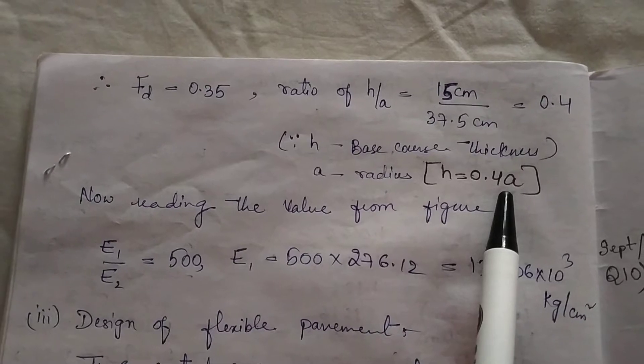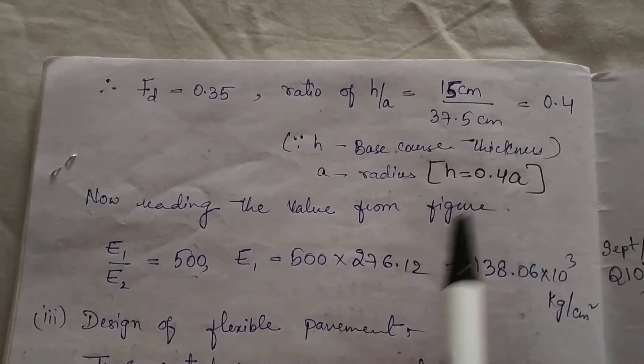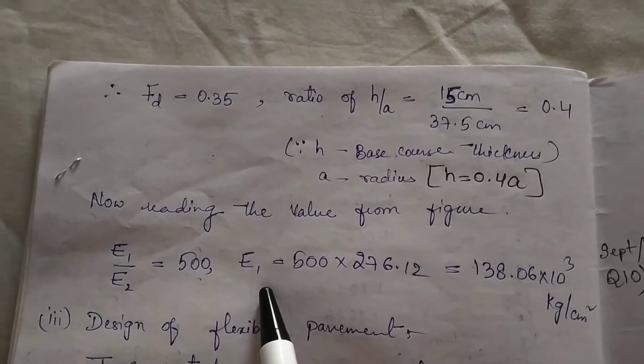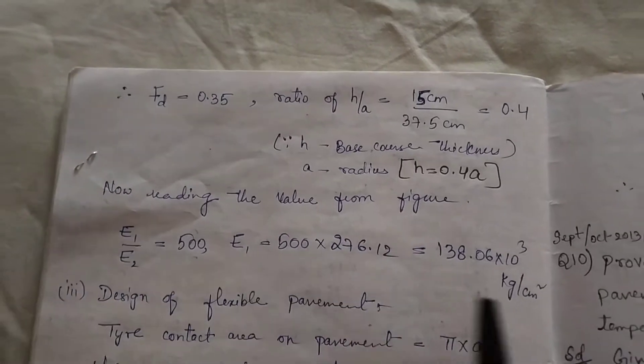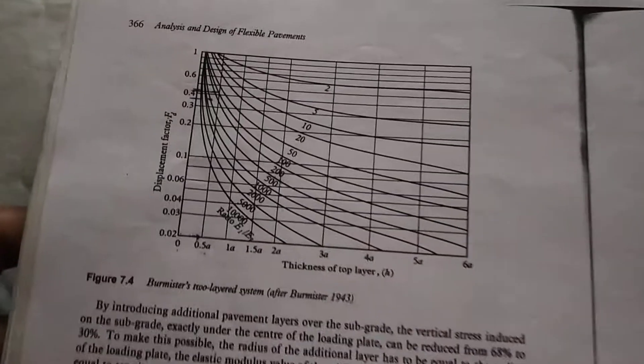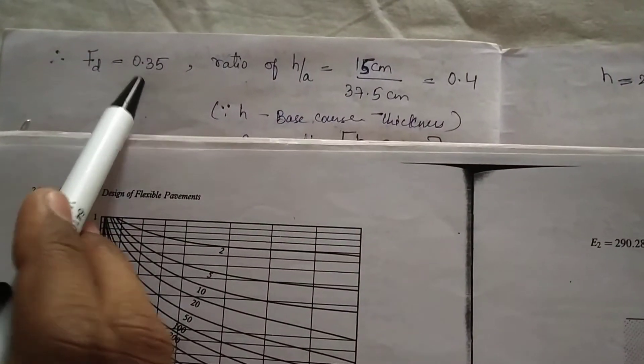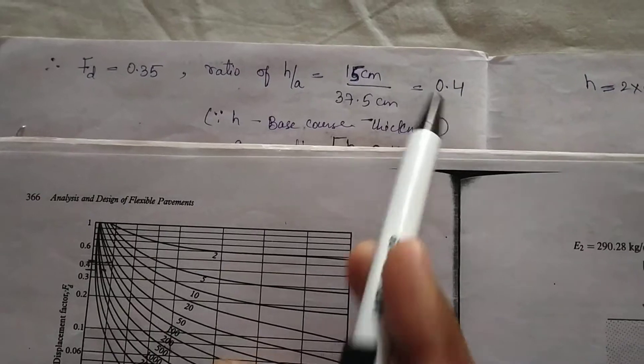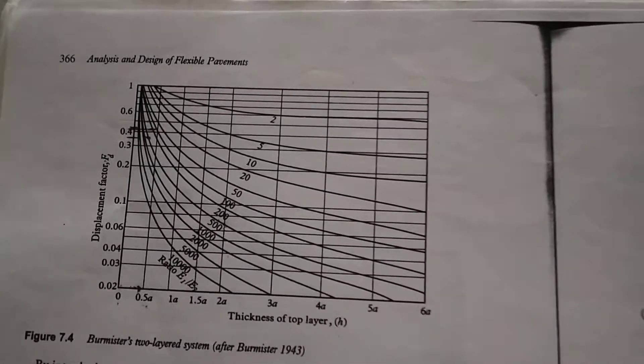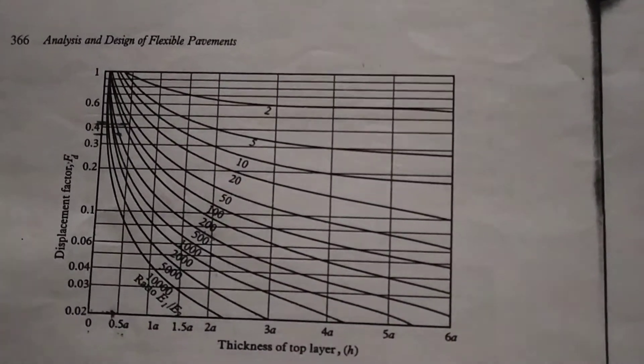Now we will calculate E1 value which is unknown to us from the charts. I will show how to calculate. Here I got the value of Ft as 0.35 and H by A ratio as 0.4.